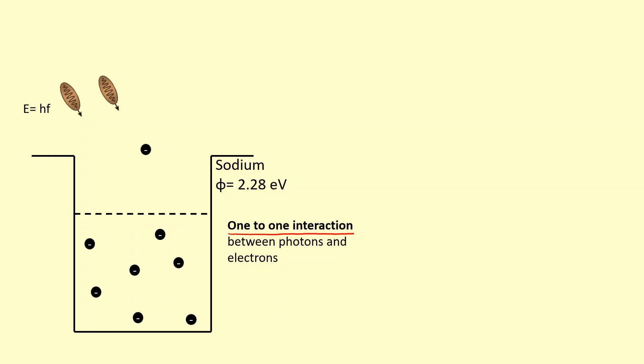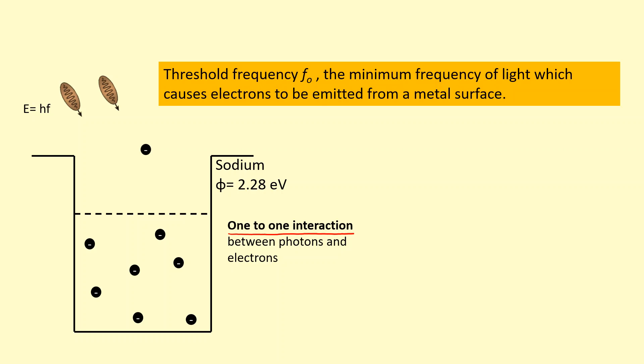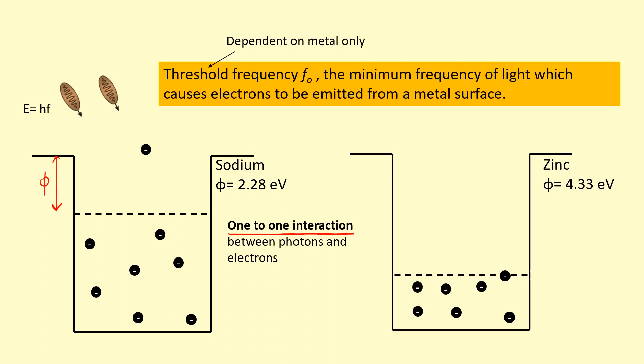There's a minimum frequency that these photons need to have, and that's called the threshold frequency. The energy provided by the photon needs to be at least this much. We're talking about the electrons near the surface here, the ones that require the least energy to escape. We need to at least give them that much. Of course, for electrons deeper inside we'll need even more energy for them to escape. So the threshold frequency depends on the work function, therefore the threshold frequency depends on the metal only.